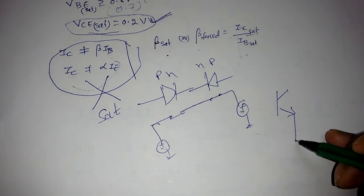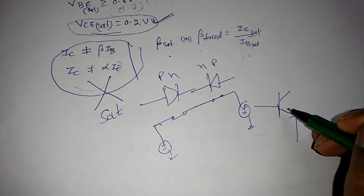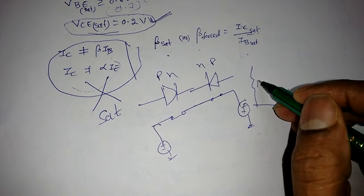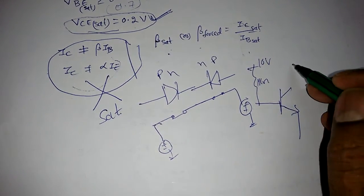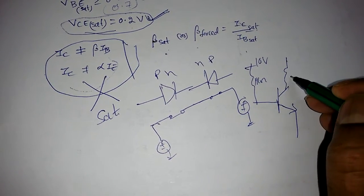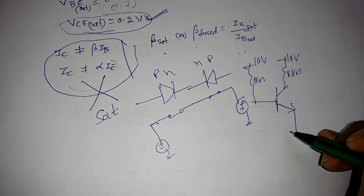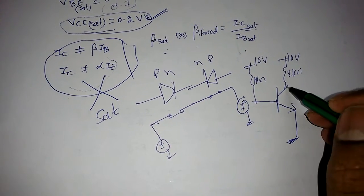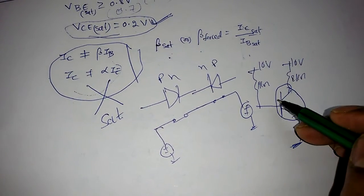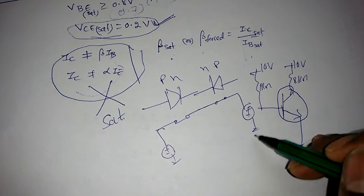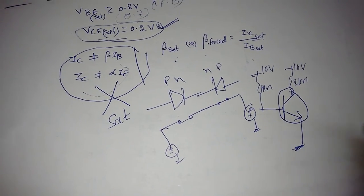In the next lecture, we will apply these conditions to actual circuits — for example, a circuit with 1 kΩ, 10 V, 2 kΩ, 10 V — and determine the region of operation of the transistor. These types of problems come frequently in exams.